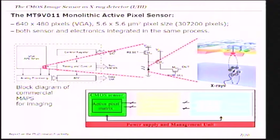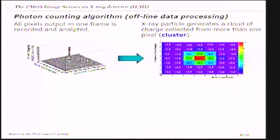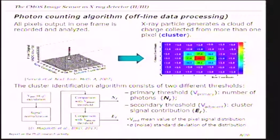I characterized the sensor, which consists of 300,000 pixels — each pixel was analyzed. When the sensor is exposed to x-ray photons, the x-ray photons interact with the sensor and generate a cloud of charge. This cloud of charge is collected by more than one pixel. The central pixel of the cluster is the seed and collects the higher value of the photon energy, while the surrounding pixels collect a fraction of the total photon energy.